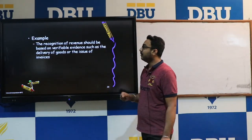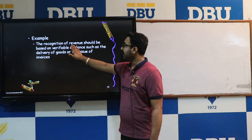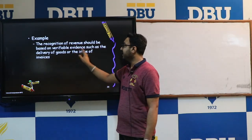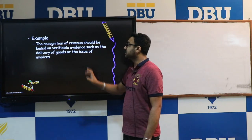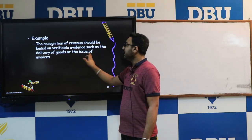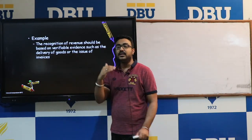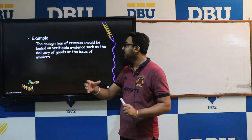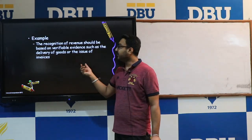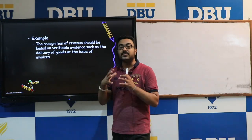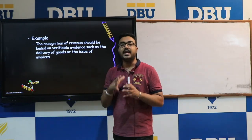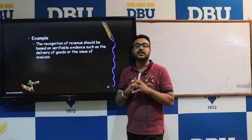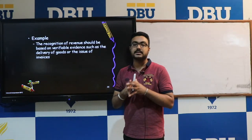For example, the recognition of revenue should be based on verifiable evidences such as delivery of goods or the issue of invoices. When the organization delivers the goods to a particular customer or from the issued invoices, we can determine the exact amount to record in the books of accounts.